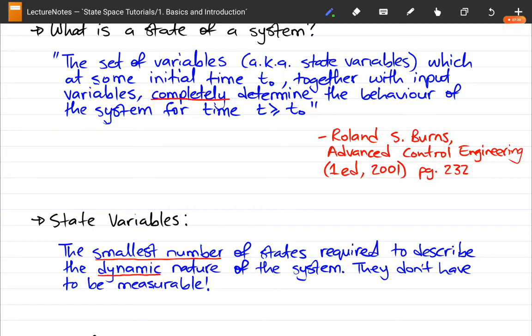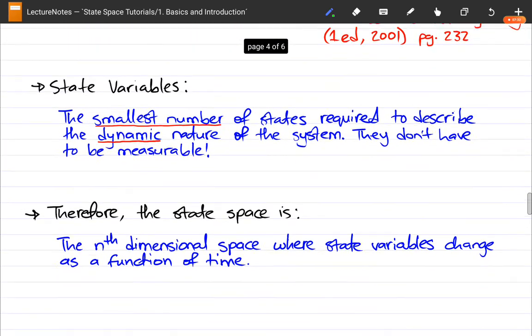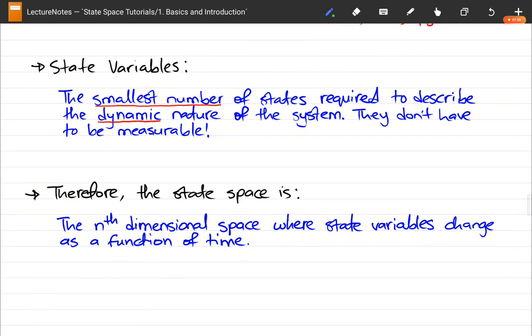As time progresses, your system evolves and you want your state model to be able to express completely what your system looks like over any given time greater than your initial time. So now we can say therefore the state space is the nth dimensional space where n is your minimum number of state variables which should be defining your system. The nth dimensional space where state variables change as a function of time—that is our state space.